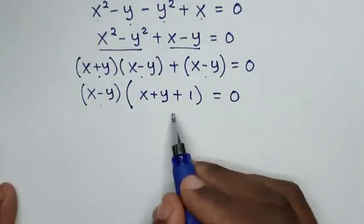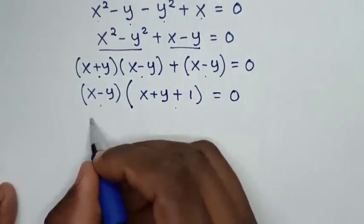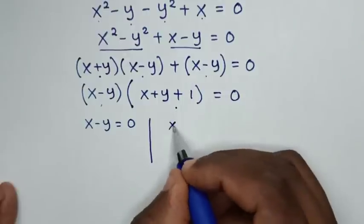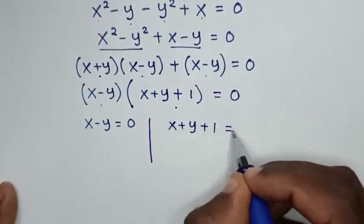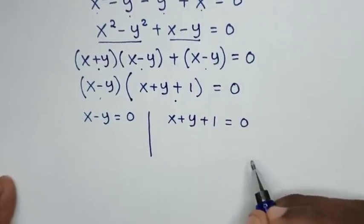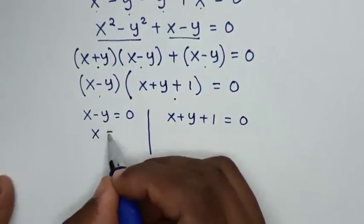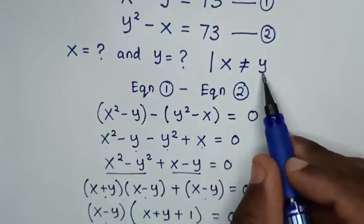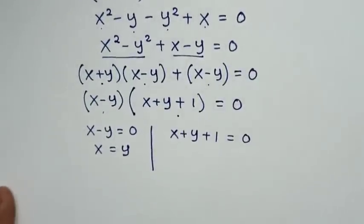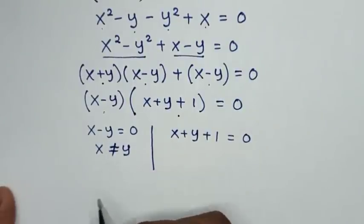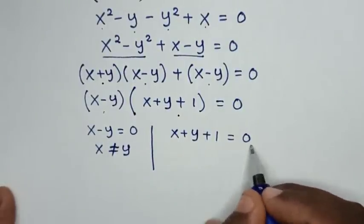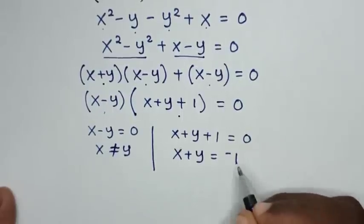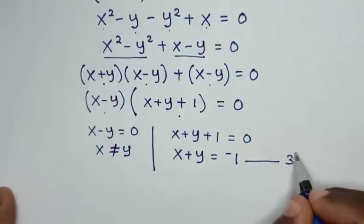We have two solutions: x minus y equals 0, or x plus y plus 1 equals 0. From the first solution, x equals y. But from our problem, x is not equal to y, so we discard this. From the second solution, we take 1 to the right side: x plus y is equal to negative 1. We call this equation 3.